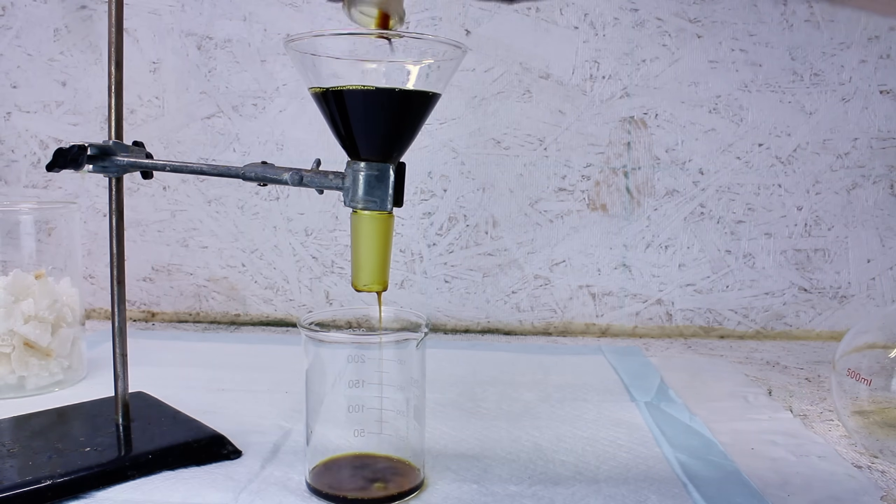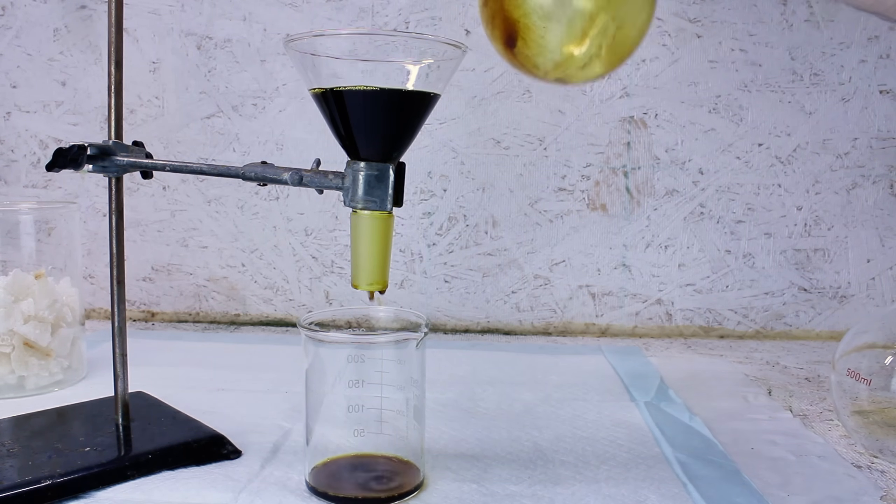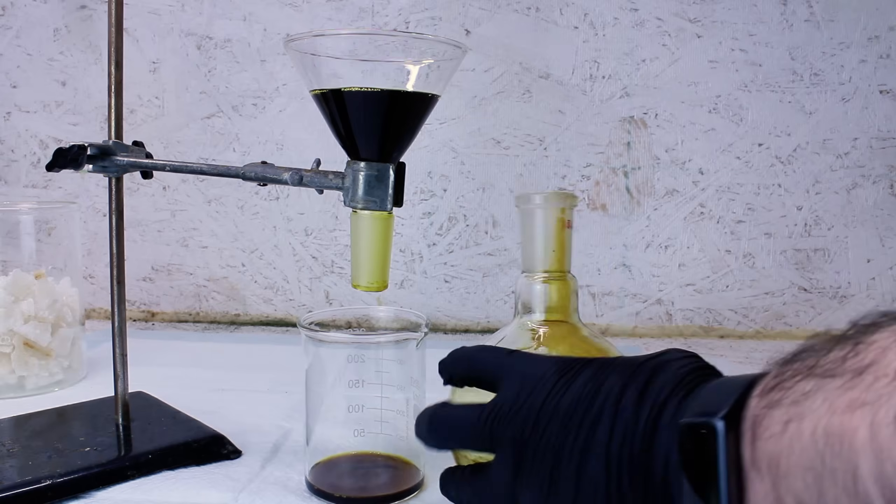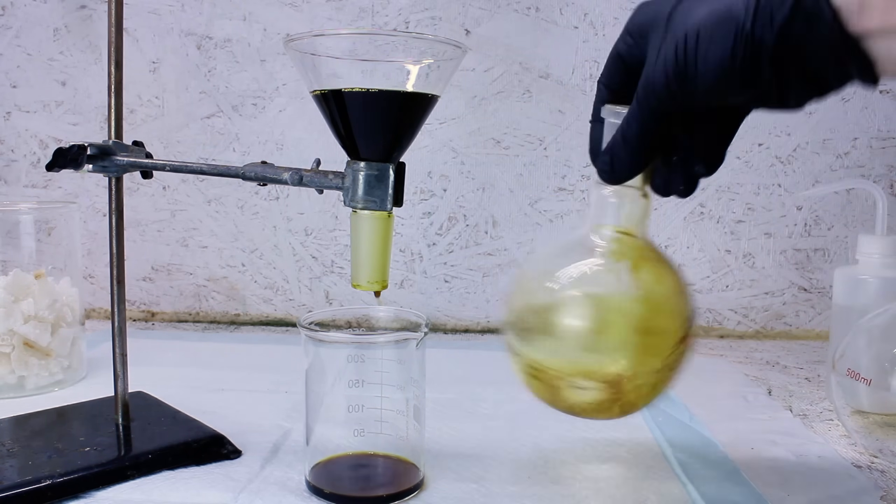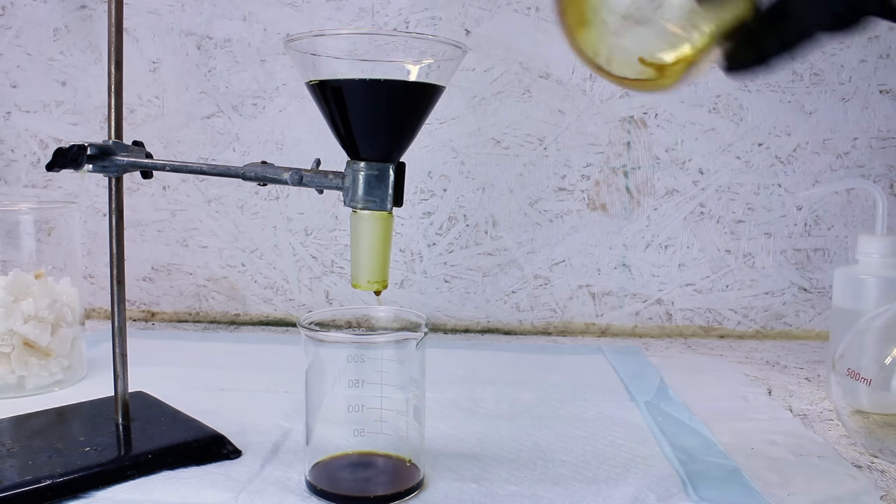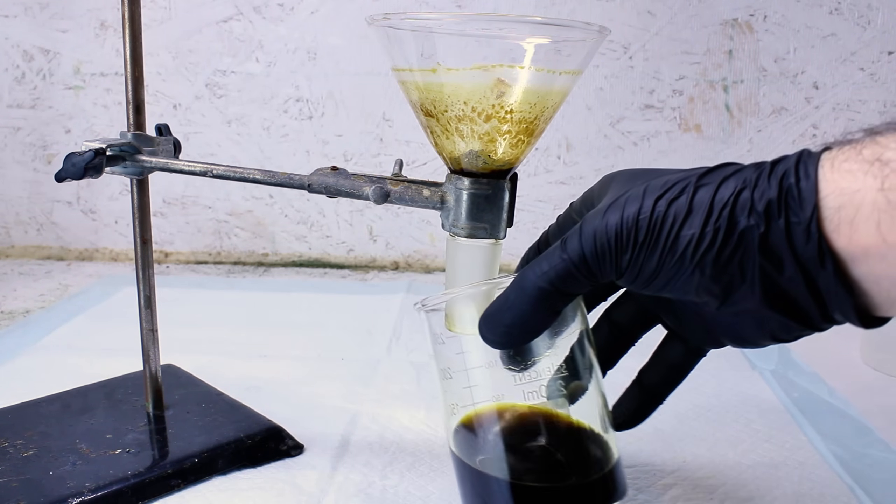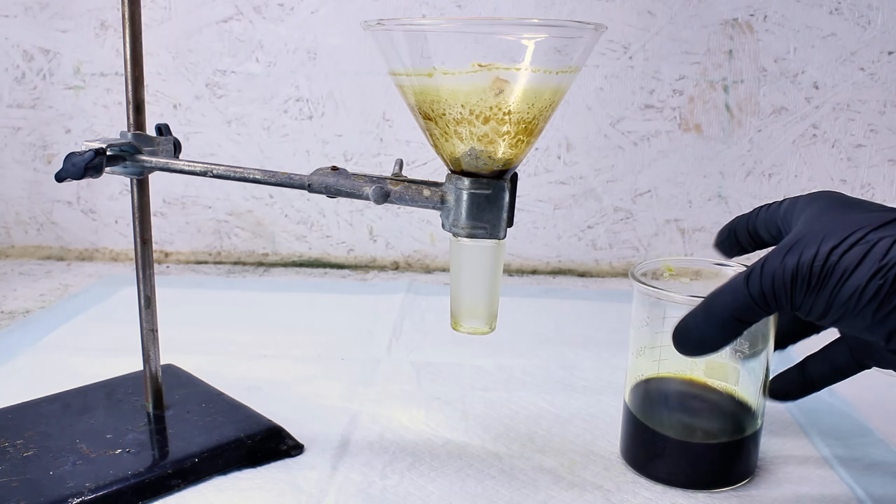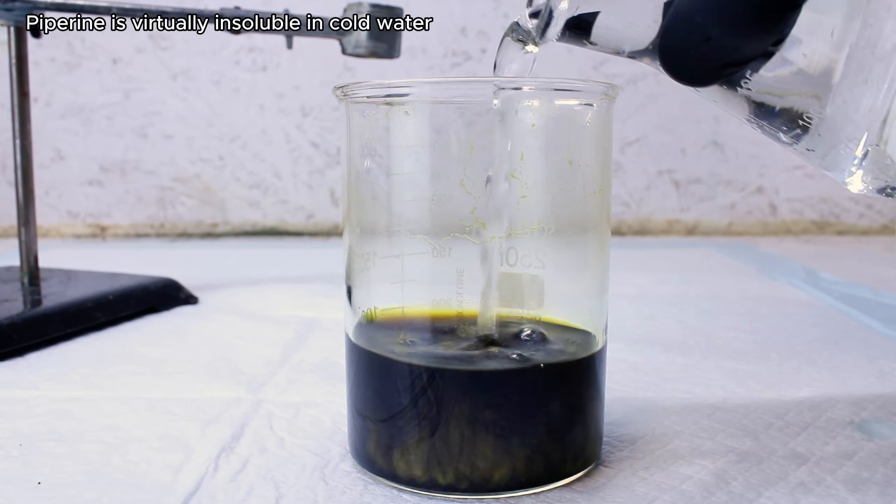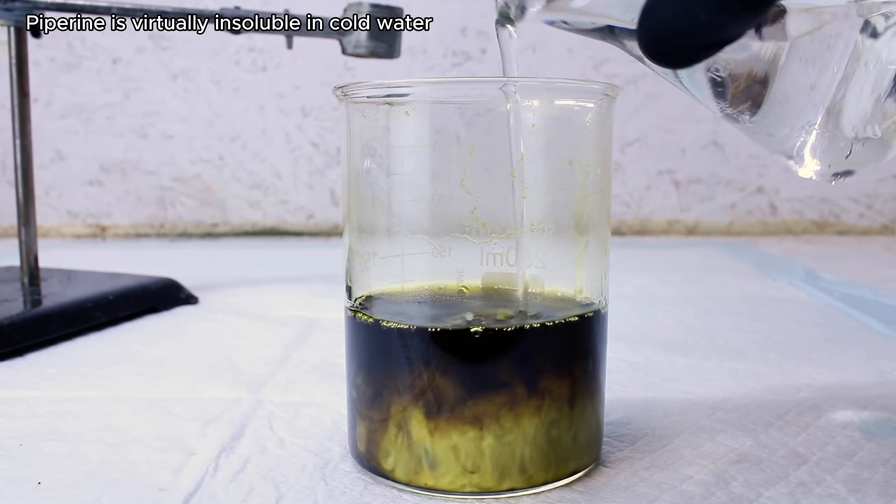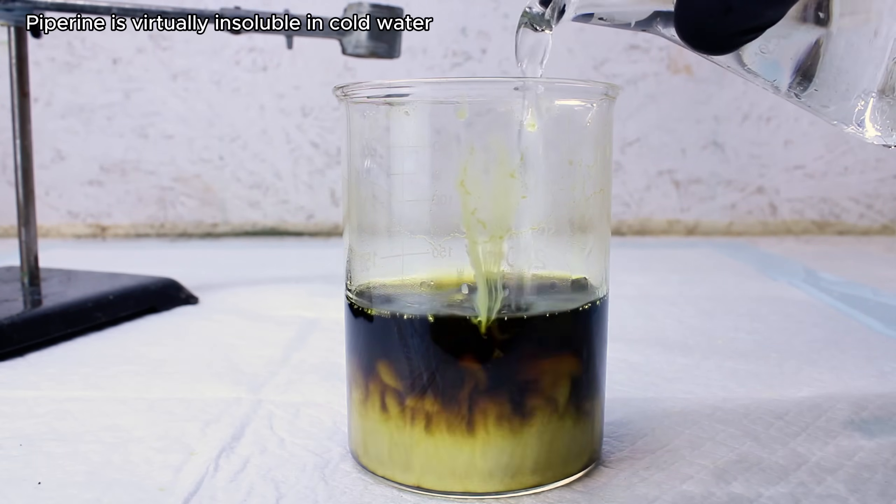This step ideally will leave me with a solution of now water-soluble plant oils and water-insoluble piperine. Now to actually separate out my piperine, all I need to do is very slowly add ice-cold water to the solution. Immediately upon adding the water, white clouds of piperine form as it crashes out of solution. This looks pretty cool, so I'm going to stop talking for a moment so you can watch it.